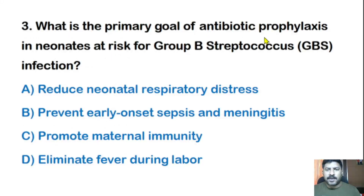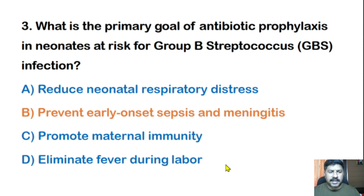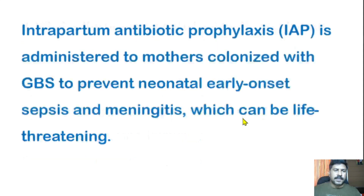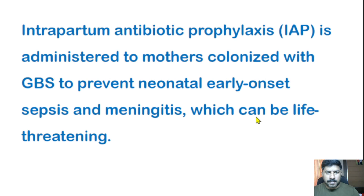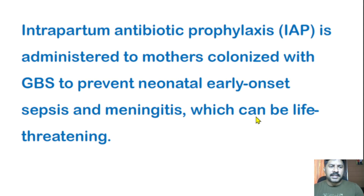Third question: What is the primary goal of antibiotic prophylaxis in neonates at risk for Group B Streptococcus infection? Options: reduce neonatal respiratory distress, prevent early onset sepsis and meningitis, promote maternal immunity, or eliminate fever during labor. The correct answer is prevent early onset sepsis and meningitis. Intrapartum antibiotic prophylaxis (IAP) is administered to mothers colonized with GBS to prevent neonatal early onset sepsis and meningitis, which can be life-threatening.